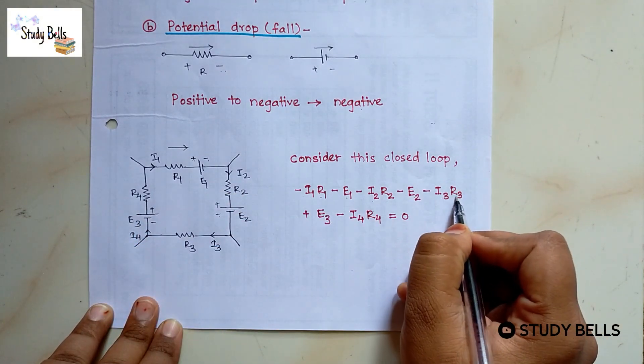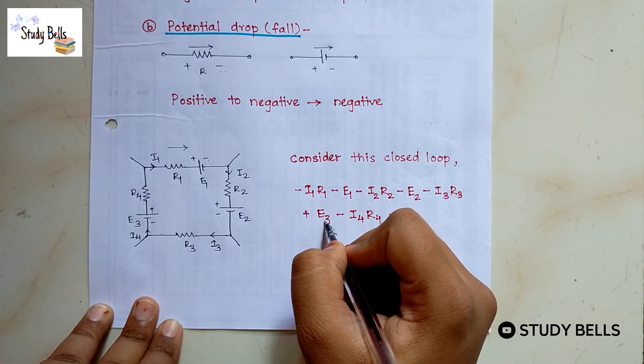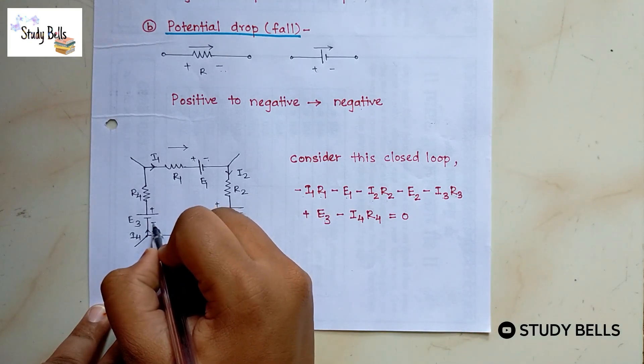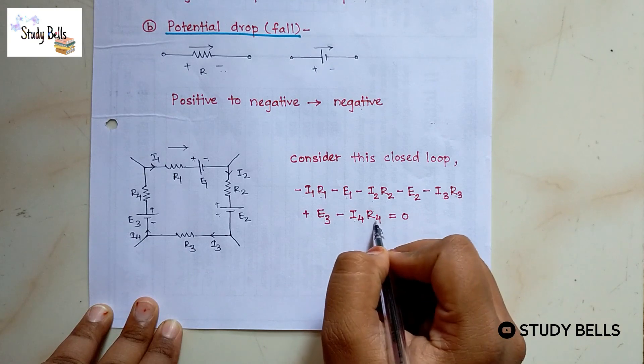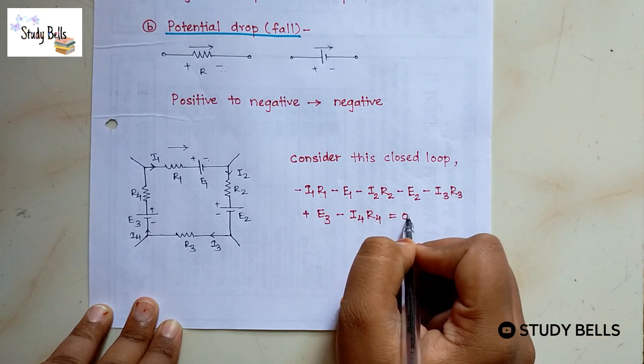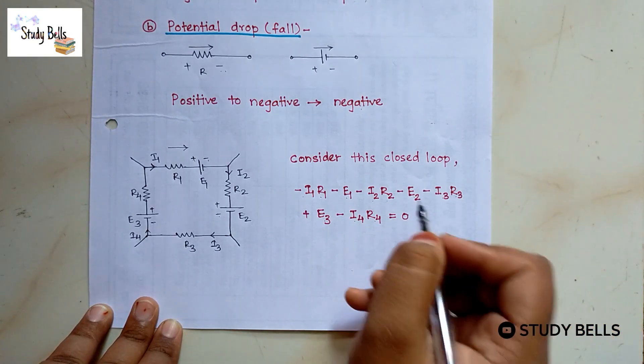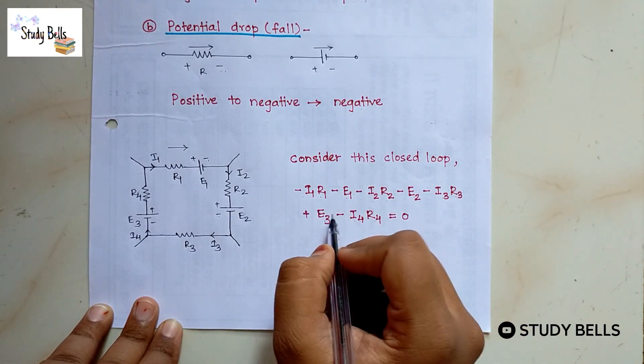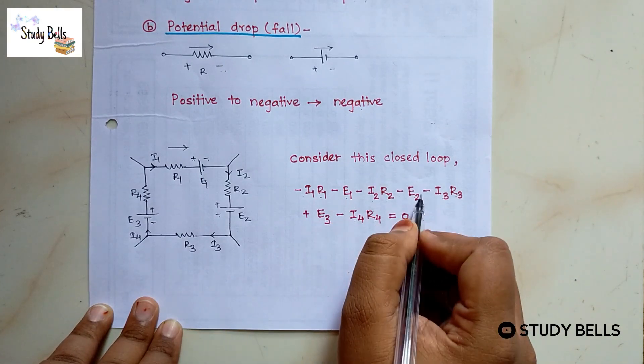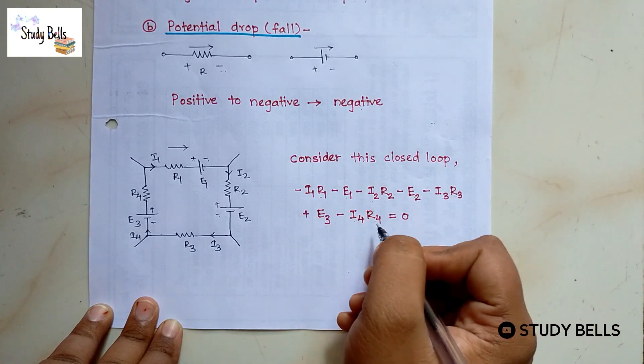Same for third and fourth branch. Minus I3 R3 plus E3. Because we are going here negative to positive. And minus I4 R4 equals 0. From this equation, we can find out values of each battery, current and resistances.